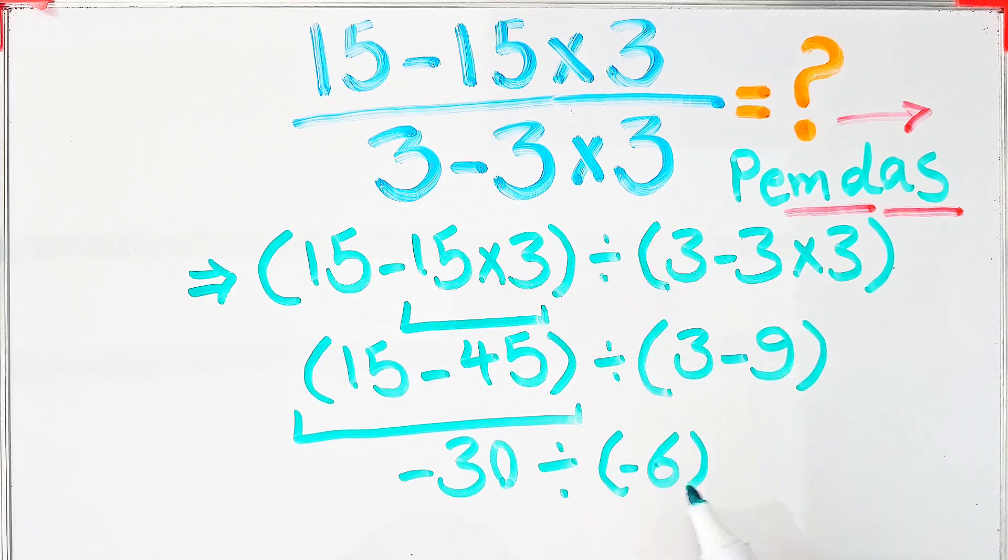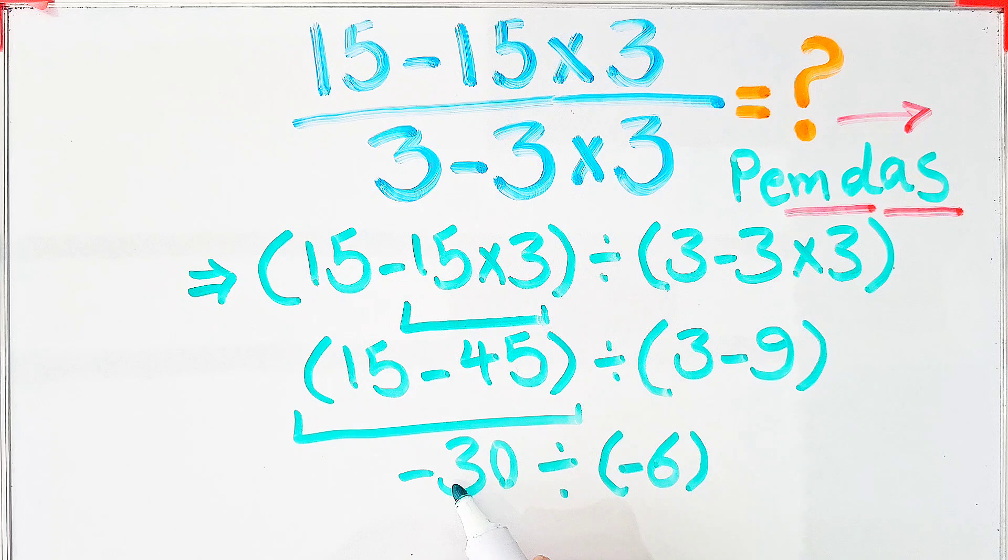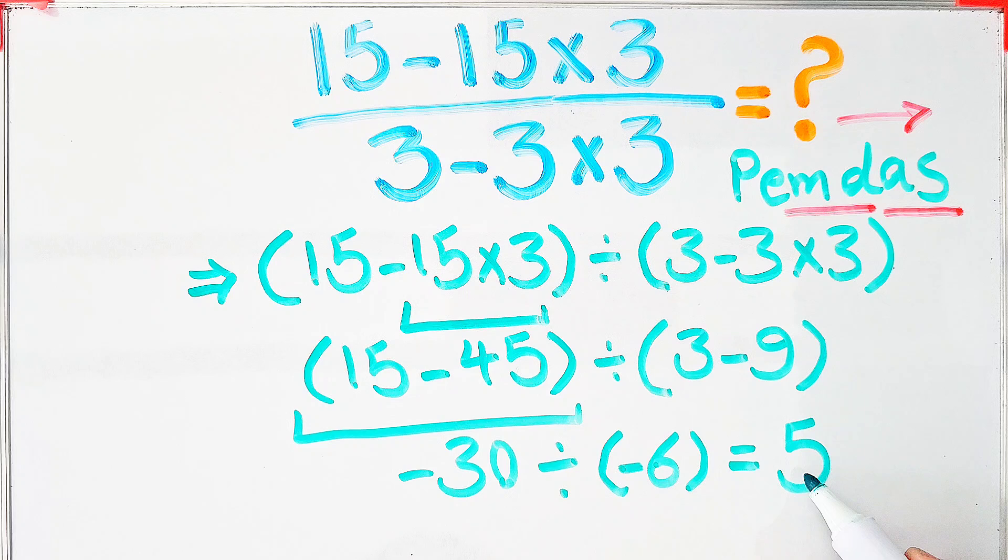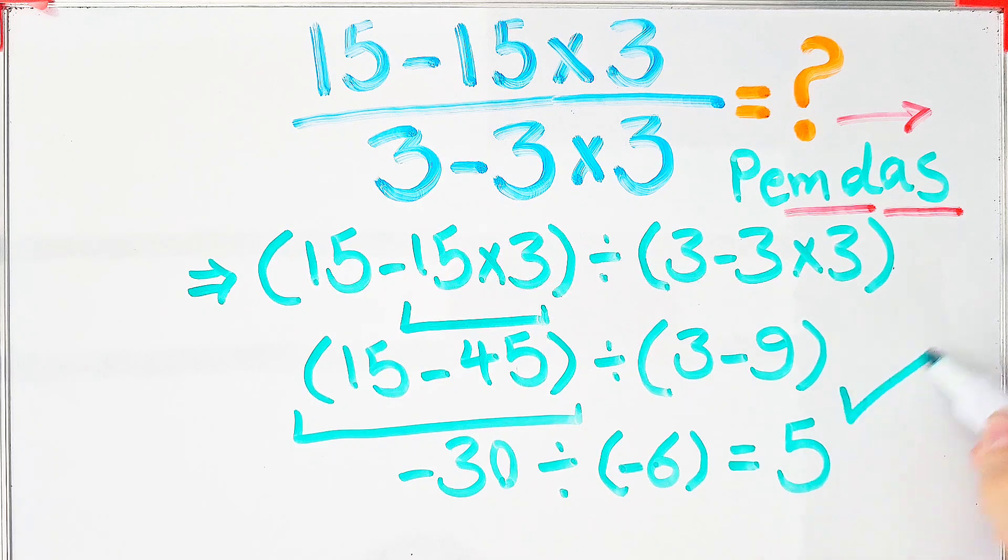Negative 30 divided by negative 6 equals 5. The final answer to this question equals 5. Thanks for watching, guys. To see more math videos, subscribe to the channel. Goodbye.